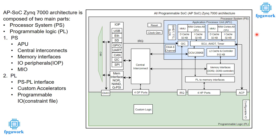In Zynq 7000, the PS part has further subcomponents: it has APU (Application Processor Unit), central interconnects, memory interfaces, peripherals, and multiplexed IOs. Within the APU, there are further subcomponents. The CPU — there can be two CPUs if it is a dual-core APU, or a single processor for single-core. The CPU is the main component that regulates and controls all functions of the PS.